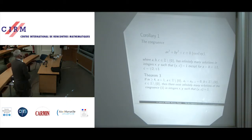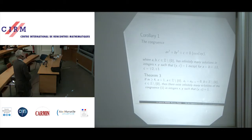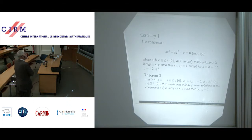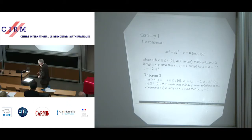And Theorem 3: if M is greater than or equal to 4, N equals 1, A is a non-zero integer, A1 through A_{M-1} equal 0, and B and C are non-zero integers, then there exist infinitely many solutions of congruence 1 in integers x, y such that y is relatively prime to c.